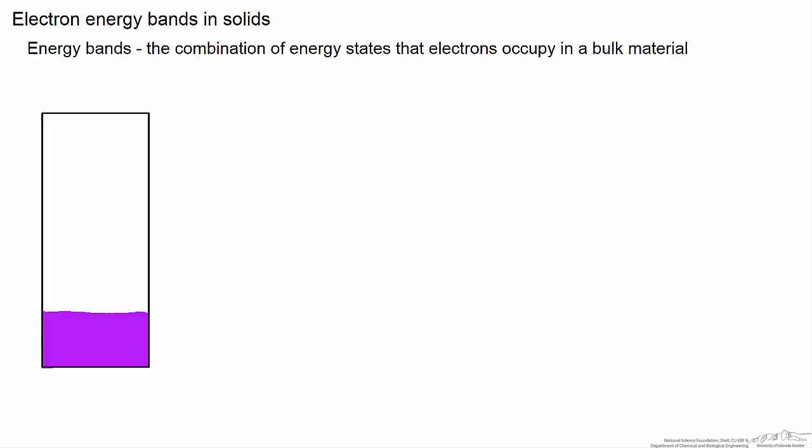There are states that the electrons can occupy directly adjacent in terms of energy, shown here in green. Electrons can easily move into these states and are thus available for electrical conduction in the material.